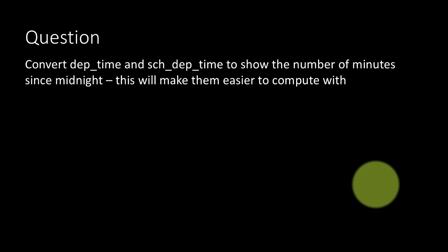So now let's just see some applications of mutate. Convert departure time and scheduled departure time to show the number of minutes since midnight. This will make them easier to compute with. Now, as you have seen, when you look at departure time and scheduled departure time, they are stored in military format like, you know, 0517 or 517. 517 is really 5:17 AM.